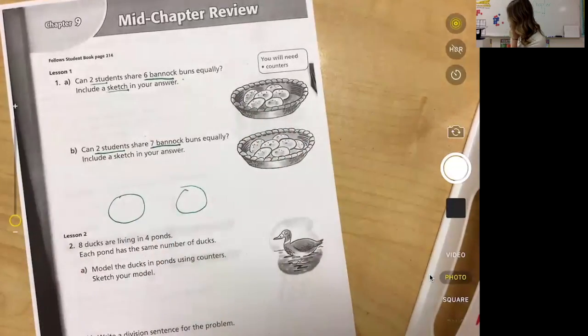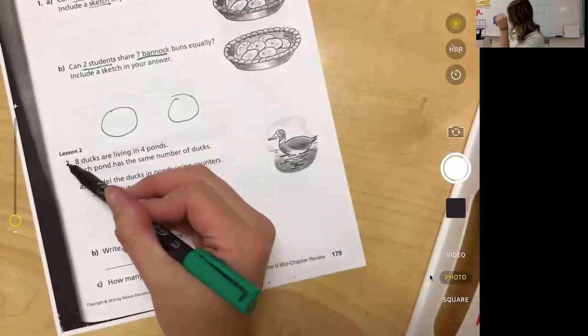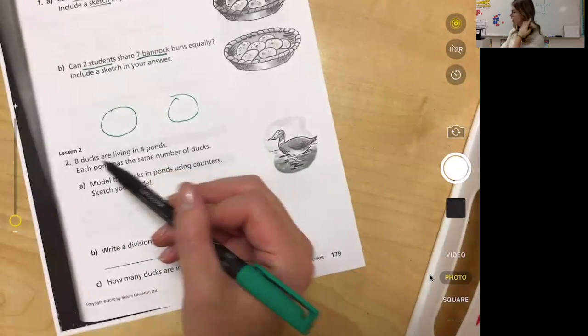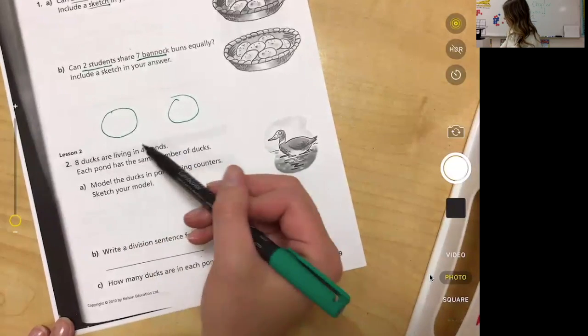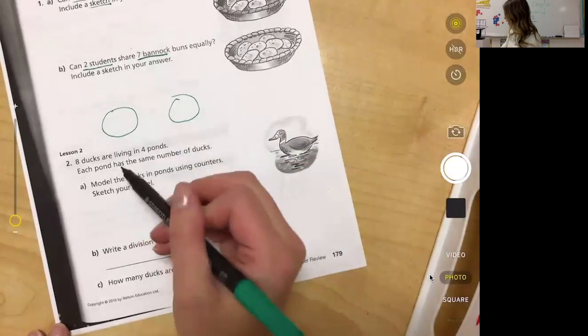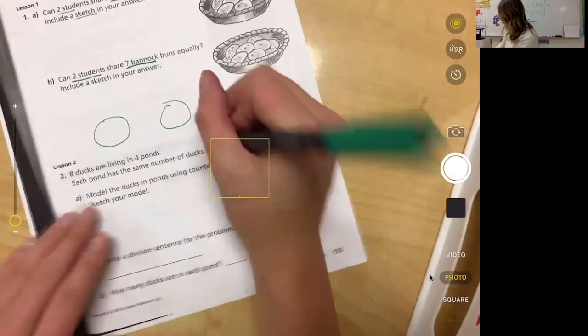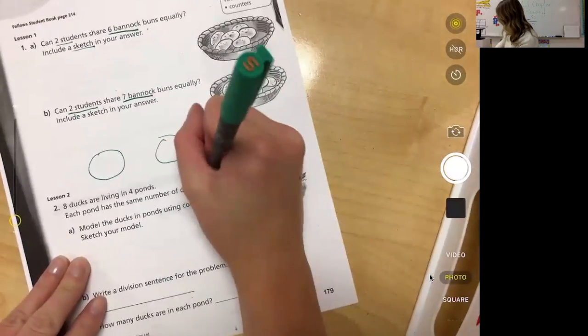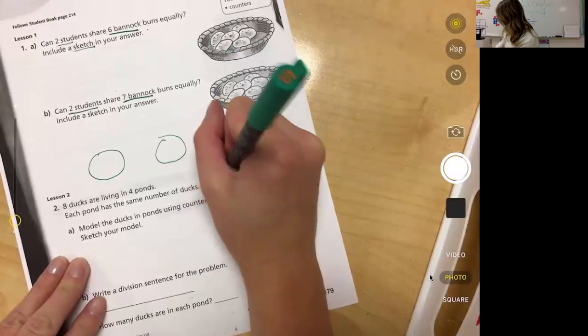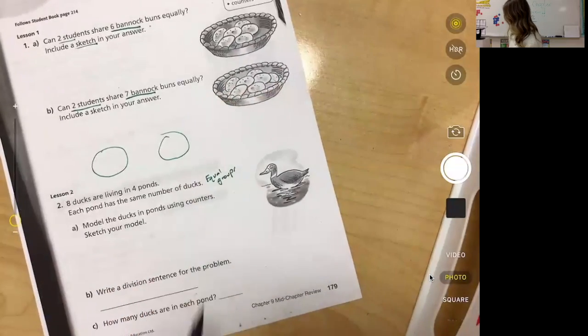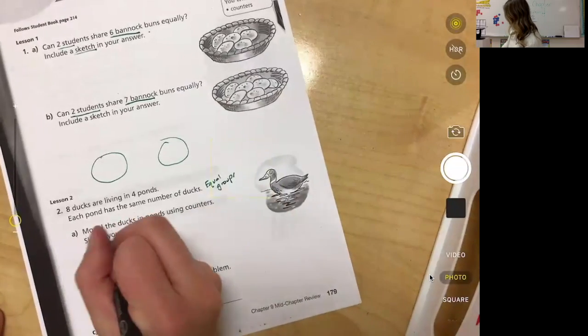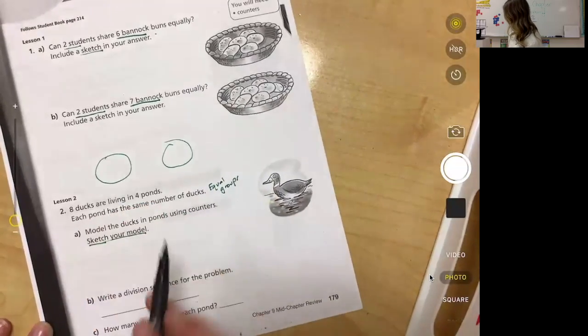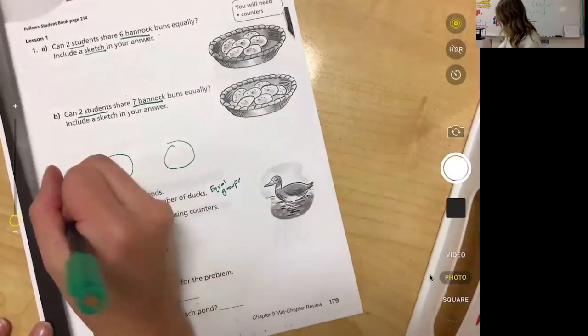For lesson two, number two, it says there are eight ducks are living in four ponds. Each pond has the same number of ducks, so there are equal groups. Model the ducks in ponds using counters. Again, you don't have counters, that's fine, but I also want you to make sure you're drawing your picture, you're drawing your sketch.